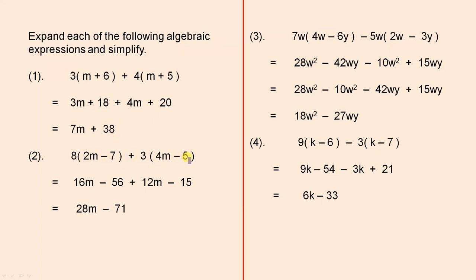Number 2. We have those terms there. 8 twos are 16m minus 56 plus 12m minus 15. Let's look at the m's first. 16m plus 12m is 28m, minus 56 minus 15 is minus 71.